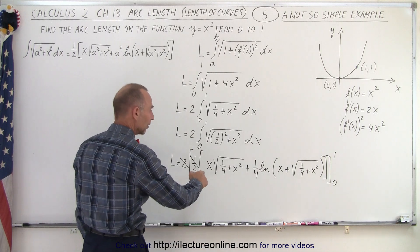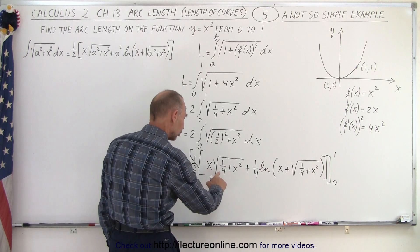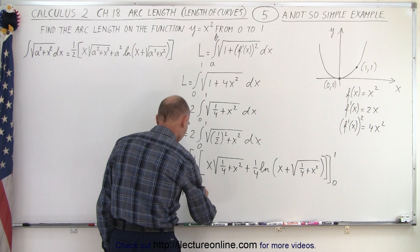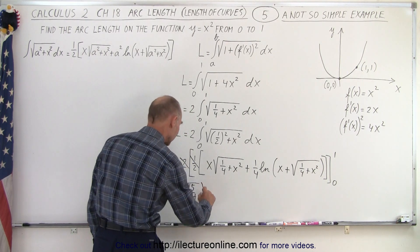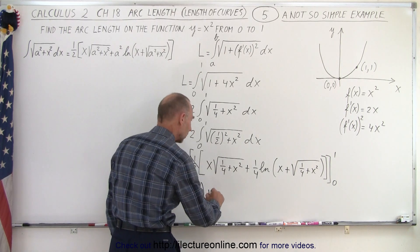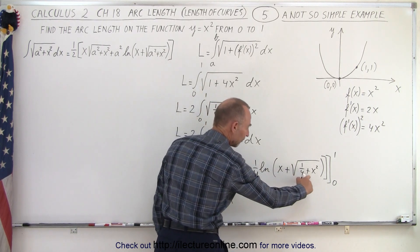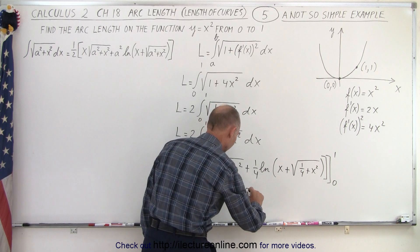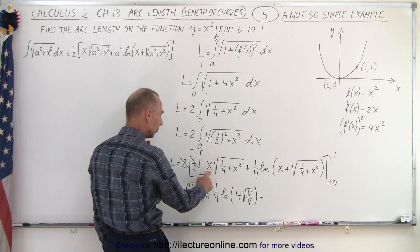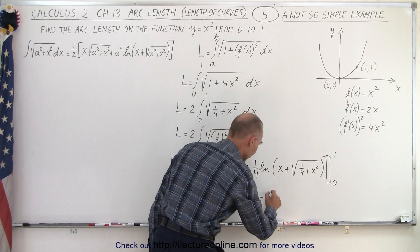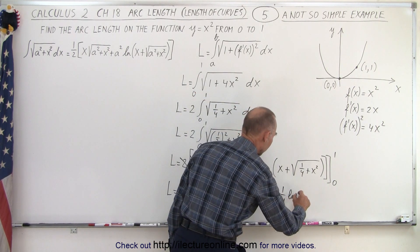And now when we plug in the upper limit for x, we get the length is equal to 1 times the square root of, this is 1 plus 1/4, which is 5/4, and I need the square root symbol in there, plus 1/4 times the natural log of 1 plus 5/4 again, so we have 1 plus the square root of 5/4. This minus, when I plug in the 0, the lower limit, 0 times x is 0, 0 times anything is 0.